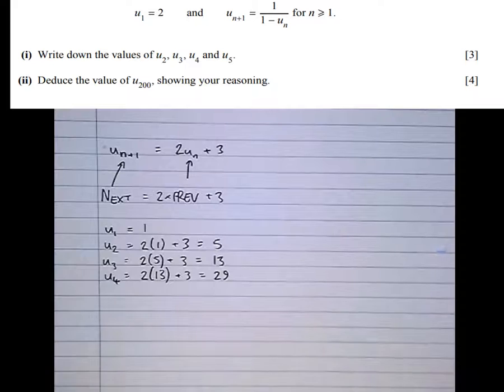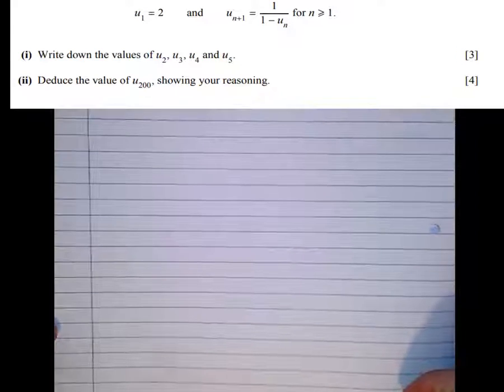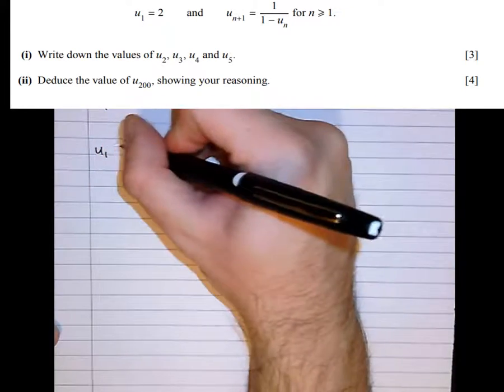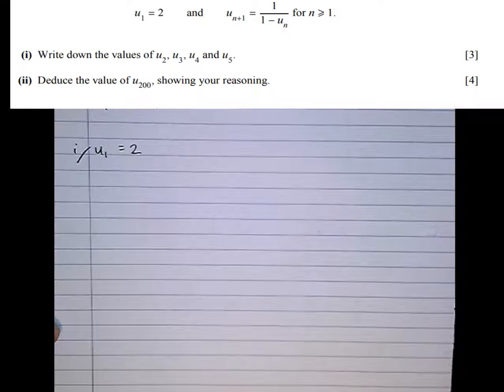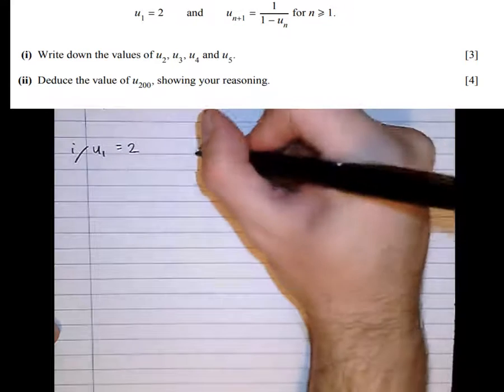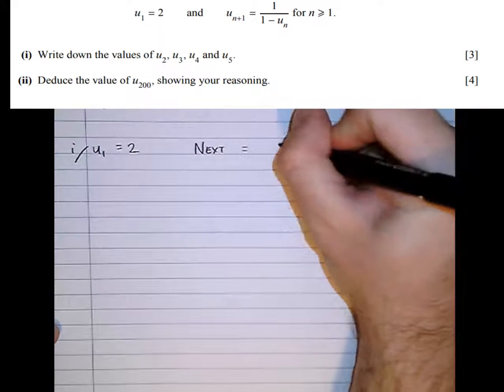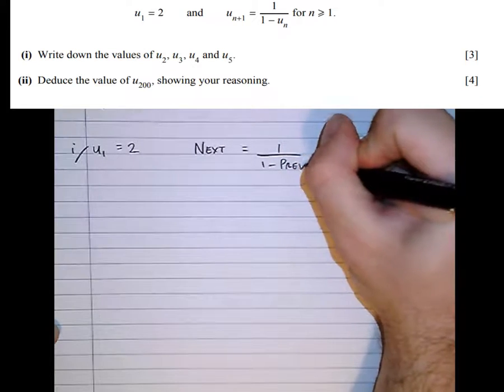So now we know what an inductive sequence is, let's have a go at this exam question here. So it tells us that the first term of a sequence is 2. This is part 1. The first term of a sequence is 2. And the rule is that the next term, I always like to write it down in words, is 1 over 1 minus the previous term.